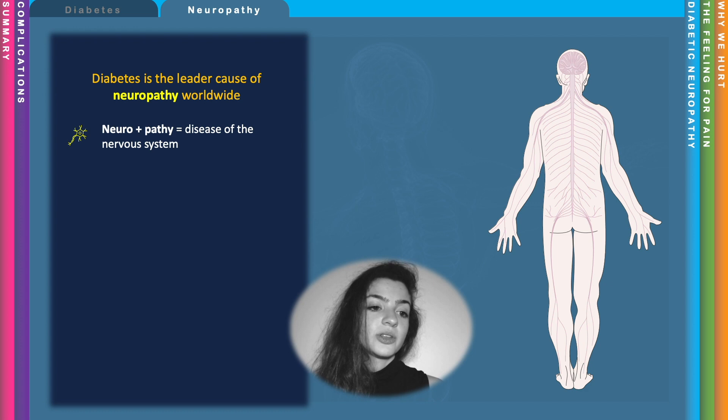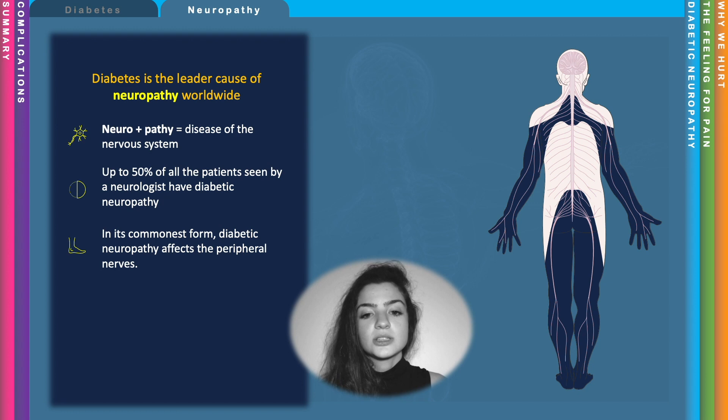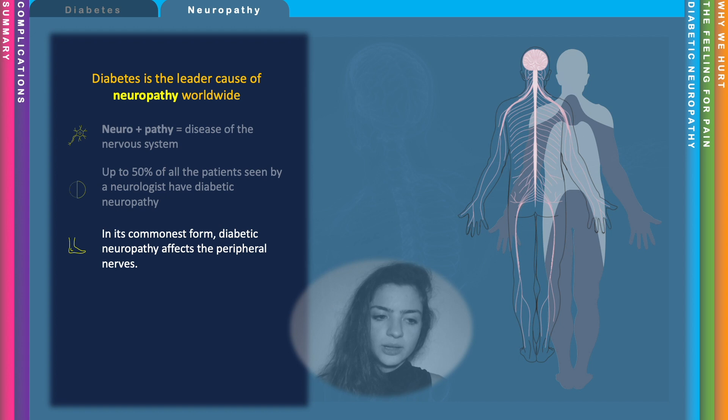Diabetes is the leading cause of neuropathy worldwide. Neuropathy means disease of the nervous system, and up to 50% of all patients seen by neurologists have diabetic neuropathy. In its commonest form, diabetic neuropathy affects the peripheral nerves — the nerves supplying the limbs.